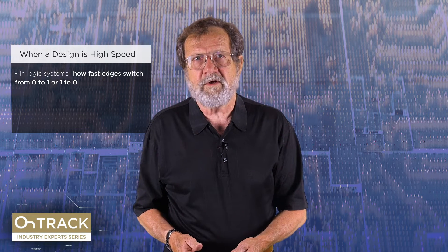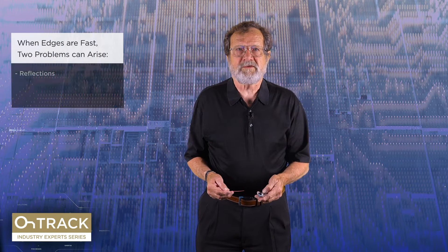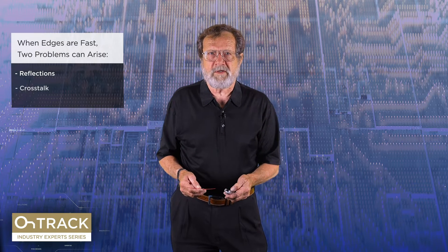So how do we decide when a design is high-speed? As I mentioned, when we switch from one logic state to the other, that's going to drive nearly all of us — even when the clock is not high-speed. I'm going to explain how to decide when things are fast, and it has to do with how fast the edge is compared to the length of the line on which it's traveling — a transmission line. When the edges are fast, two problems happen: reflections and crosstalk. We'll take those one at a time.